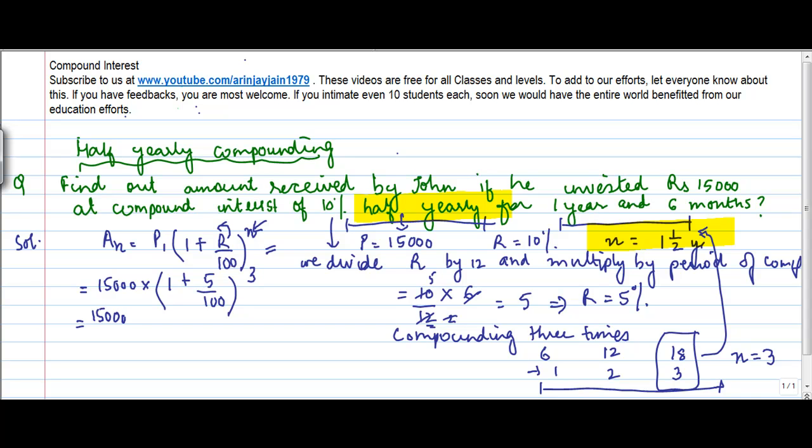This will give me 15,000 into 1 plus 5 upon 100 to the power 3. If you solve this, you get 105 upon 100 to the power 3 into 15,000. This can actually be written as 21 upon 20. So this will become 15,000 into 21 by 20 into 21 by 20 into 21 by 20.